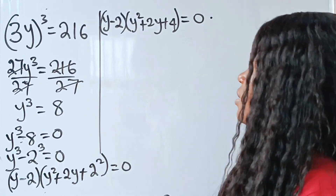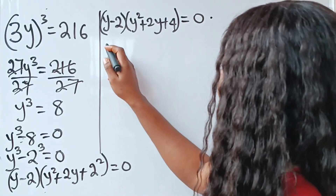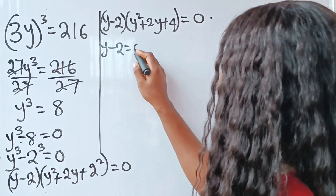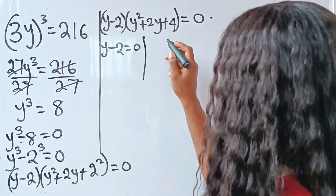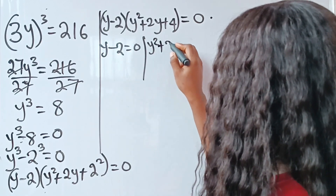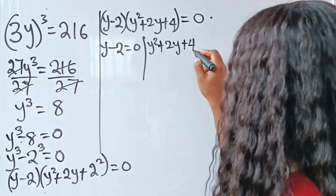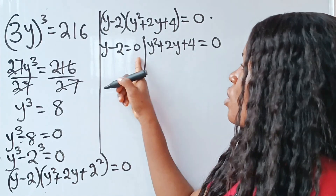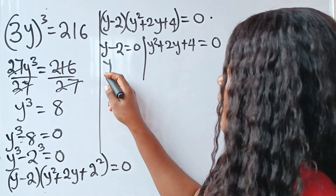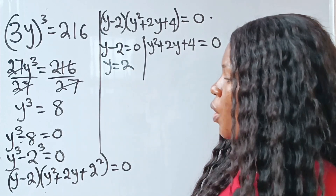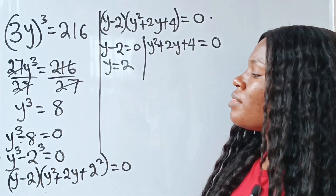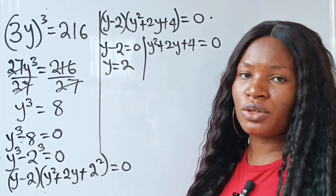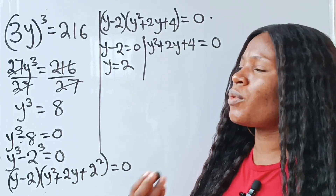From here we can say that y minus 2 equals 0, and y² plus 2y plus 4 equals 0. So from the first factor we get y equals 2. Now from the quadratic factor we can use the quadratic formula to solve.